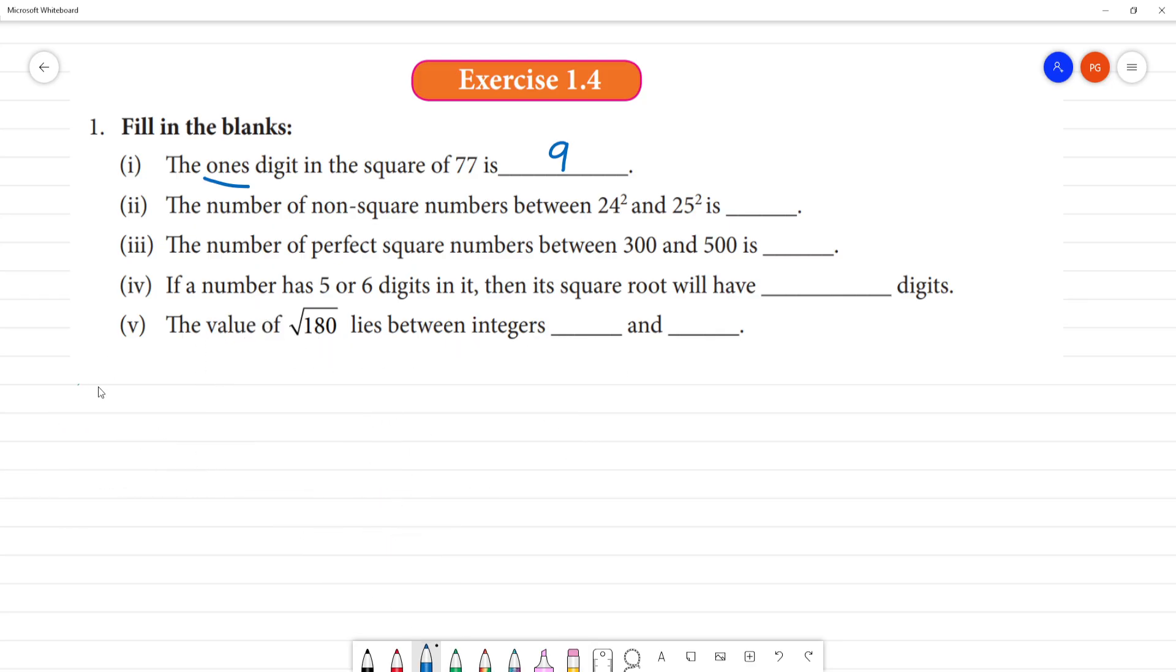Next is second question. The number of non-square numbers between 24 square and 25 square. So, this is one important hint. How do we get the number? 24 multiplied by 2 is 48. So, there are 48 numbers.